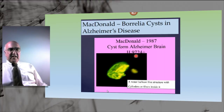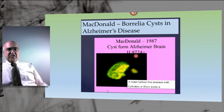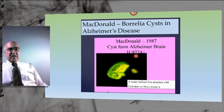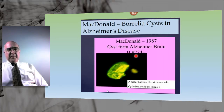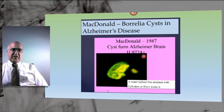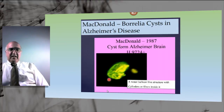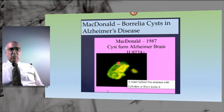Here we have staining with Borrelia-specific monoclonal antibody H9724. This antibody only stains Borrelia — it does not stain any other bacteria in the microbial kingdom and does not stain human cells. The antibody was manufactured by Dr. Alan Barber, professor at the University of California, formerly at Rocky Mountain Lab, one of the world's leading authorities on Borrelia, who generously provided it to research investigators. The green and yellow fluorescence indicates abundant protein recognized by the antibody in the wall of the cyst, clearly identifying it as a Borrelia cyst.